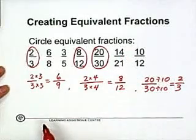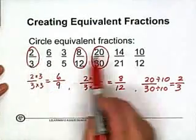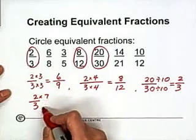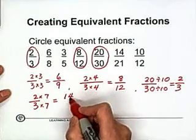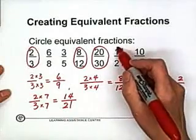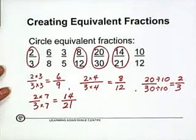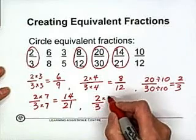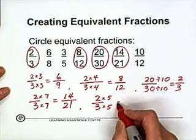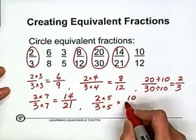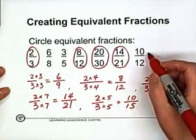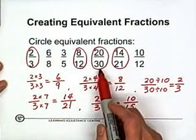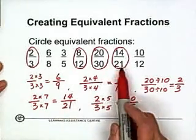Next, 14 over 21: from two to 14 we multiply by seven, so two over three multiplied by seven top and bottom gives 14 over 21 — also equivalent to two-thirds. And the last one, 10 over 12: multiplying two over three by five gives 10 over 15, which is not 10 over 12, so it's not equivalent. So two-thirds, eight over 12, 20 over 30, and 14 over 21 are all equivalent fractions.